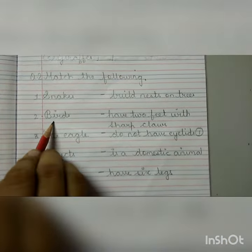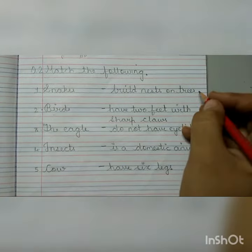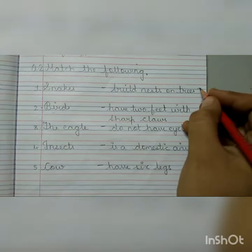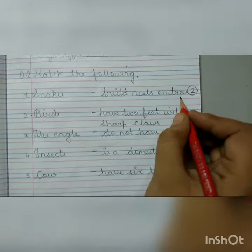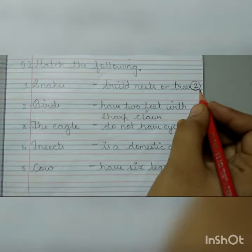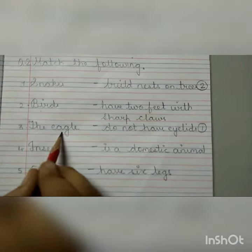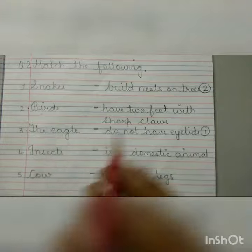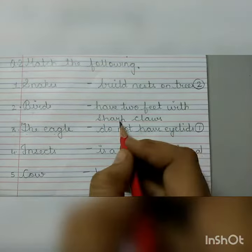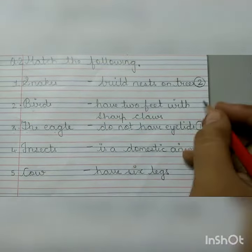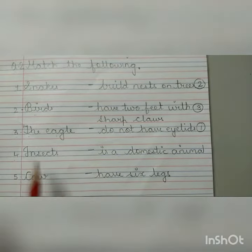Number 2: Birds. Write number 2 here. Birds build nests on trees. Number 3: The eagle has two feet with sharp claws. Write number 3.